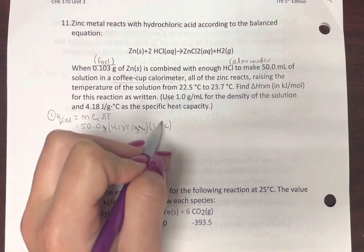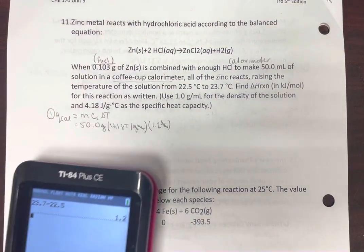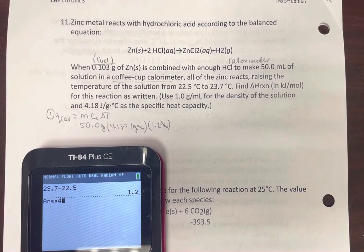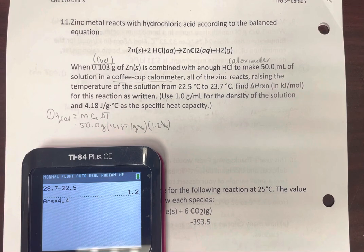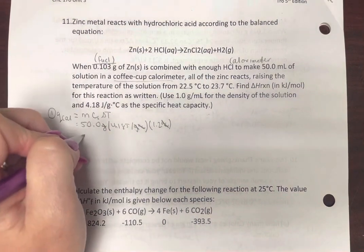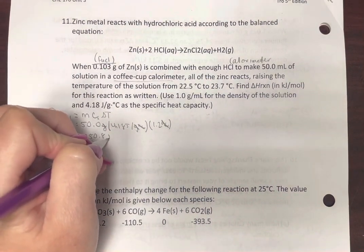Okay, so let's multiply all this out. Times 4.18, times 50. So 250.8 joules.